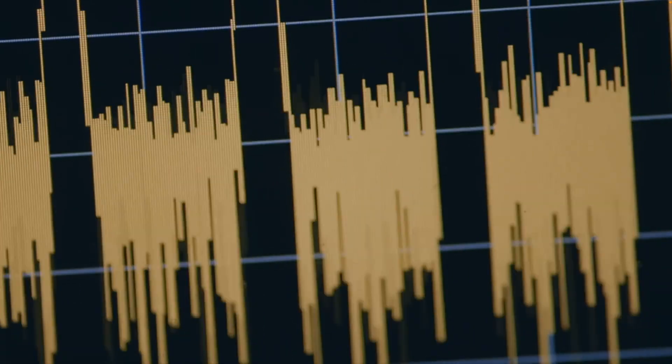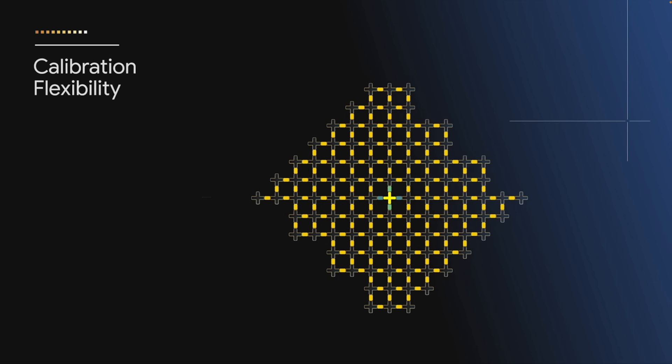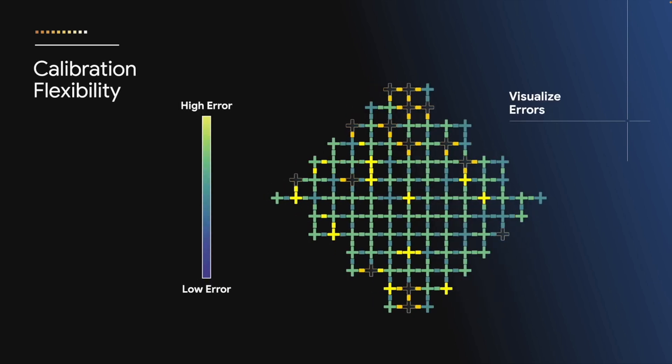Google's new chip, Willow, is a 105-qubit beast. What's special is how it tackles those errors. Willow uses advanced error correction to stabilize the qubits, making the calculations way more reliable.